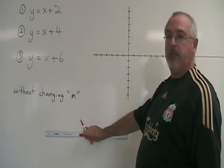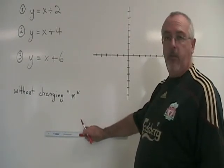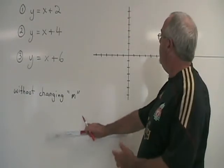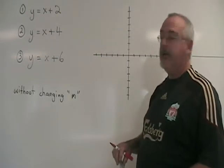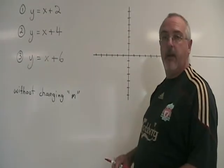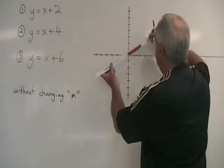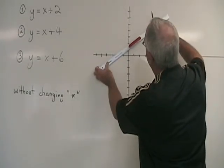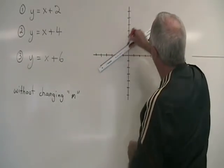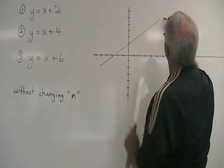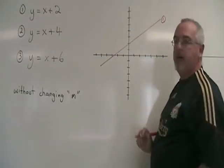Equation 1, y equals x plus 2, has a slope of 1, so it will form a 45-degree angle with the x-axis and goes through the y-intercept 0,2. So here is equation 1.